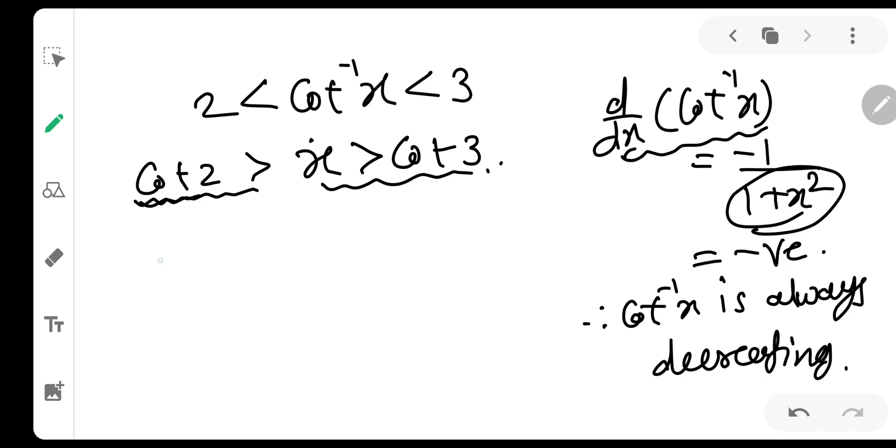It means that on the number line, if you draw this, cot of 3 will be lesser and cot of 2 will be greater. This is very important. As your x will decrease, your y will increase.